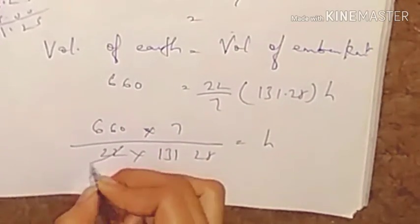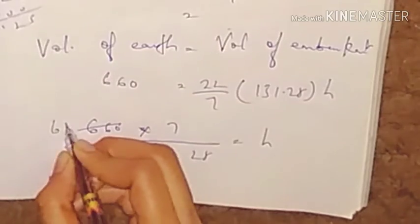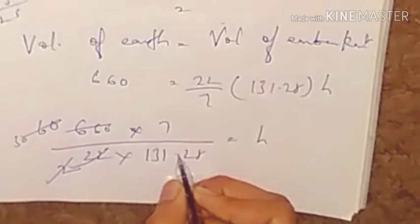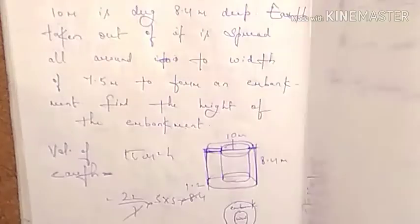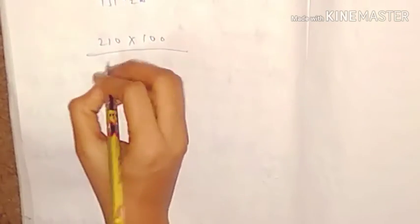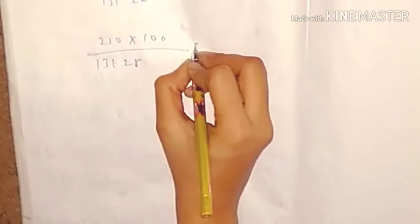Now let's solve it. We have 660 × 7 divided by 22 × 131.25 equals h. Simplifying: 660 divided by 22 gives 30, and 30 × 7 gives 210. Then 210 divided by 131.25 equals h. Converting decimals: multiply numerator and denominator appropriately to simplify the fraction.